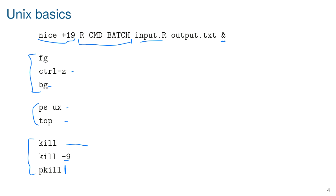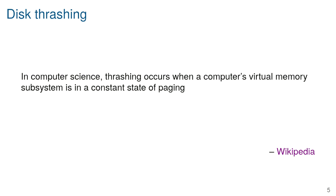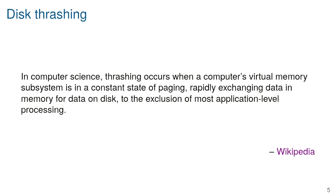The main challenge is disk thrashing — if a job starts to take too much memory, you can get into that state. The Wikipedia definition says: 'thrashing occurs when a computer's virtual memory subsystem is in a constant state of paging' — rapidly exchanging data in memory for data on disk to the exclusion of most application-level processing. Essentially, if you have 4 GB of RAM and a job needs 6 GB, the computer writes RAM information to disk to make space.